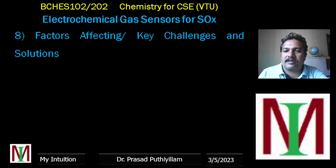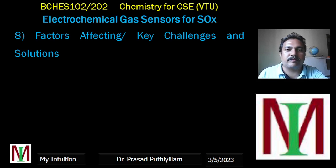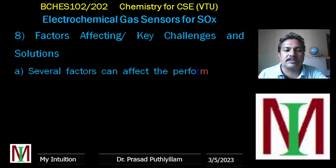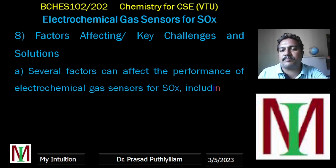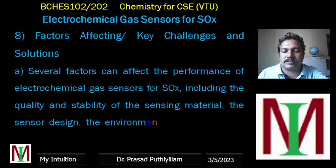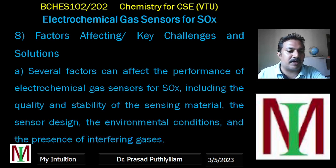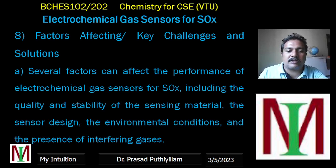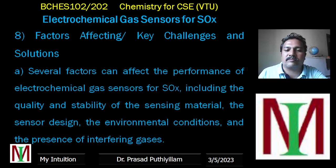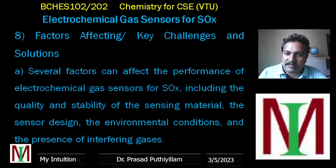Key challenges and possible solutions: several factors can affect the performance of electrochemical gas sensors for SOX, including the quality and stability of the sensing material, the sensor design, environmental conditions, and the presence of interfering gases. The sensor design must be carefully considered, environmental conditions must be controlled, and the impact of other gases that could interfere must be accounted for.